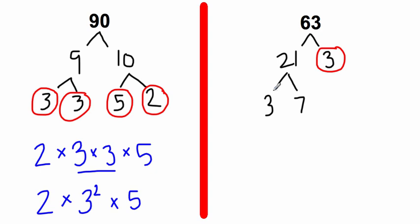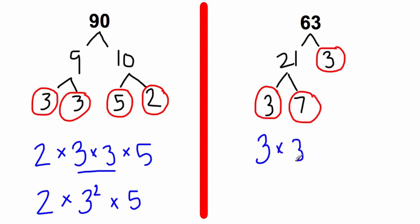3 is again prime, so we're going to circle it. And then 7 is also prime — it only has two factors. So the prime factorization of the number 63 is 3 times 3 times 7. We can write this with exponents: 3 to the second power, because there are two 3s, times 7. So 3 to the second power times 7, or 3 times 3 times 7, equals 63.